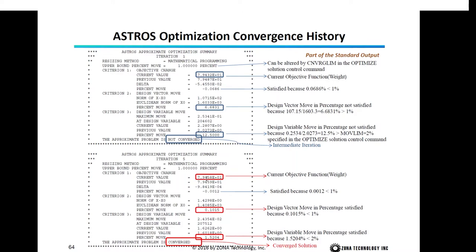At iteration number five, the difference between the current and previous objective functions divided by the previous value is 0.012 percent, which is less than 1 percent — the first criterion is satisfied. The norm of x minus x-naught divided by the norm of x-naught is 0.1 percent, which is less than 1 percent — the second criterion is satisfied. The design variable with the largest change has a change of 1.5 percent, which is less than the move limit of 2 percent. Therefore, at iteration five, the optimization problem is converged.